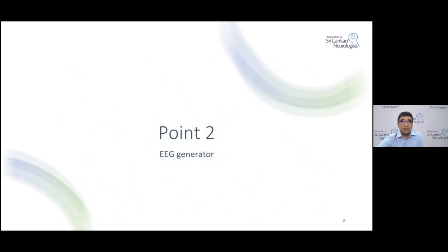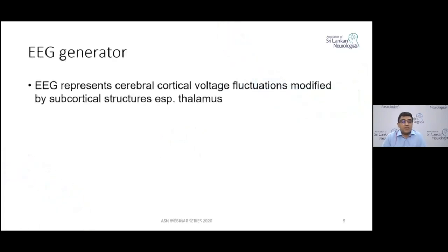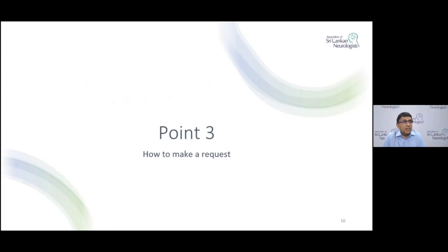EEG represents cortical activity — the electrodes on the skull record only from the cerebral cortex, not from deeper structures. The voltage fluctuations come from the cerebral cortex, though there are influences from deeper structures such as the thalamus and the ascending reticular activating system. Therefore, there is no point doing an EEG for conditions involving deeper structures — for example, a brainstem lesion or cerebellar lesion — as EEG would be of no value.